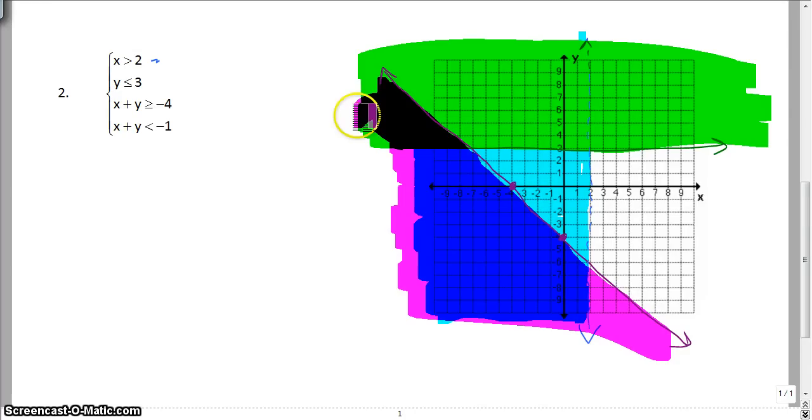And then, the last thing we have to graph is x plus y is less than negative 1. So, we have to graph one more line. So, that's going to give us x is negative 1, y is negative 1. And this is going to be a dashed line. And again, I'll test 0, 0. Is 0 less than negative 1? No, it is not. So, for the last one, we are going to be shading false. So, we will be shading up above.